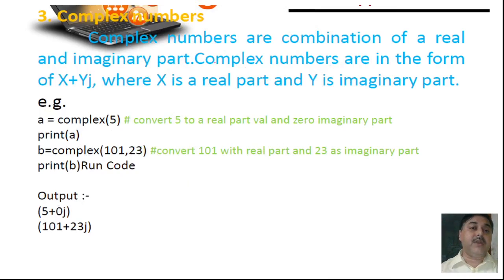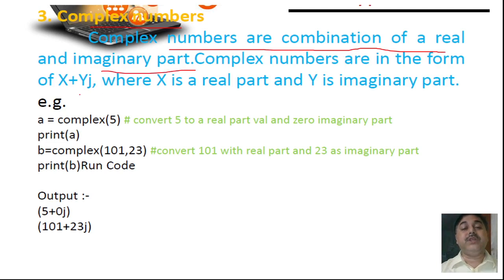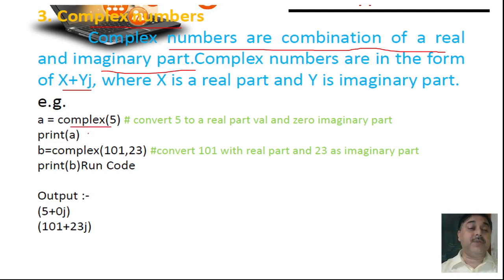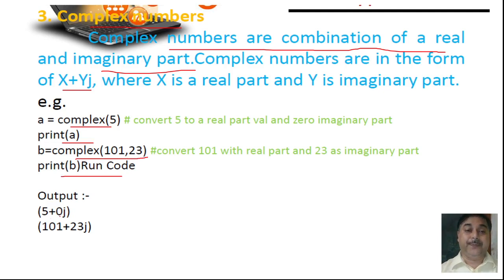Complex data type: a complex number is a combination of a real and imaginary part. There is some part which is real and some which is imaginary — like x plus yj, where x is real and y is imaginary. See here, I have a complex number 5. Complex(101, 23) is there, and when we run b, the output is 5 plus 0j. The j indicates it is an imaginary number.